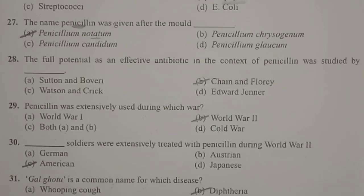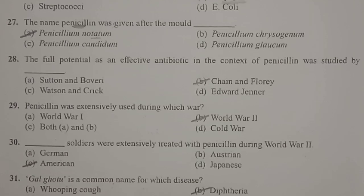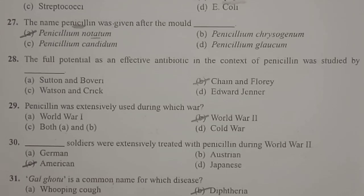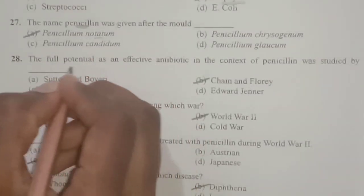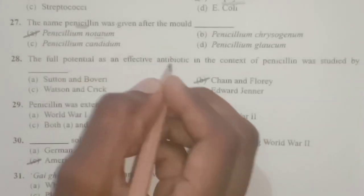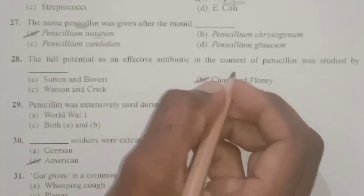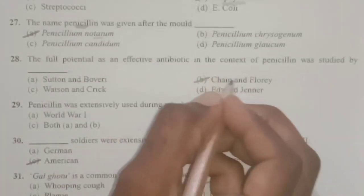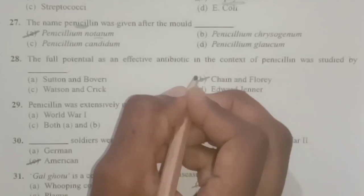Next: the full potential of penicillin as an effective antibiotic was studied by whom? The discovery of penicillin was done by Alexander Fleming. Later, it was commercially established by two important scientists: Ernest Chain and Howard Florey. They established it commercially, and the full potential of penicillin as an effective antibiotic was studied by Ernest Chain and Howard Florey.